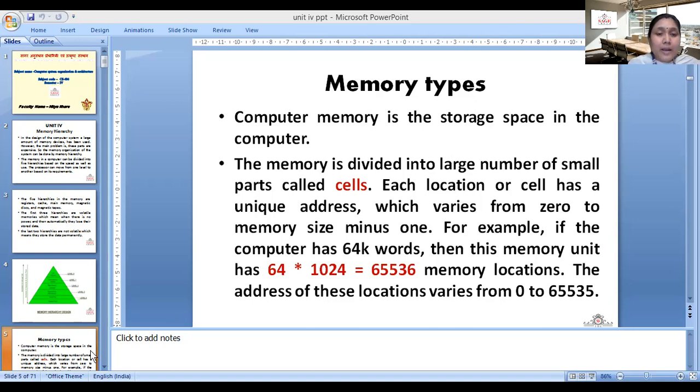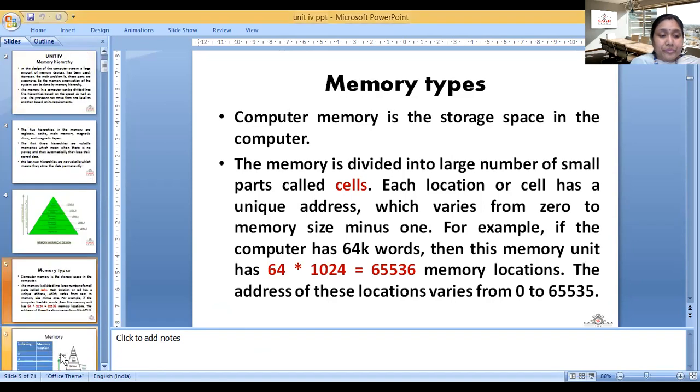So this is our basic memory definition. Memory is our storage space. Memory is divided into equal parts. In this part, the name is cell. And if memory is represented by 64k, then the value of k is 1024. If we multiply 64 by 1024, then in this memory, 64k words will be our total memory location. It will be 65,536. This is our memory definition.